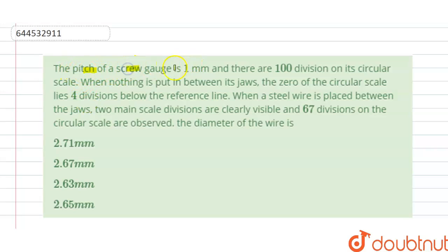The pitch of the screw gauge is 1mm and there are 100 divisions on its circular scale. When nothing is put in between its jaws, the zero of the circular scale lies four divisions below the reference line.